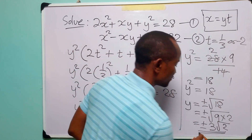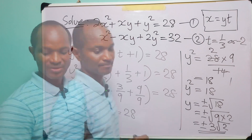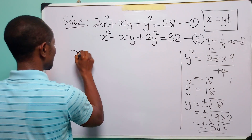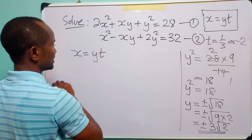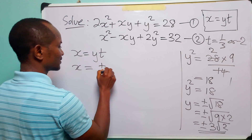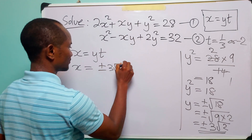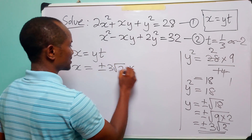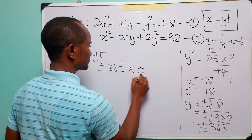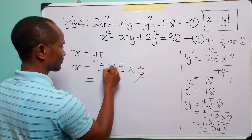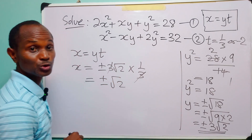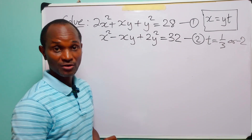These are the two values of y for t = 1/3. To find the corresponding values of x, we use x = yt. So x = ±3√2 times 1/3, which gives x = ±√2.